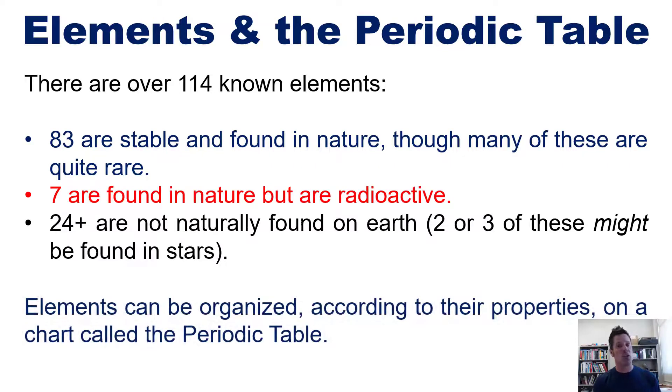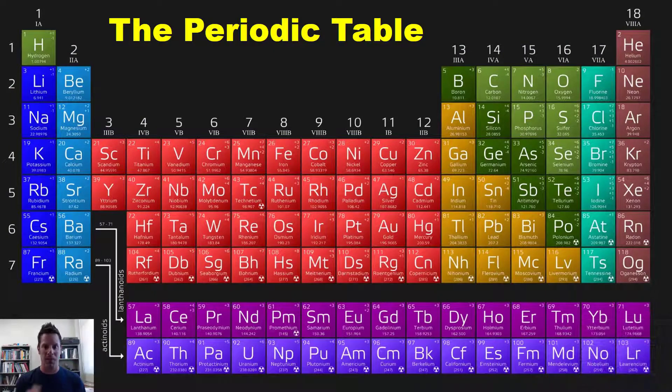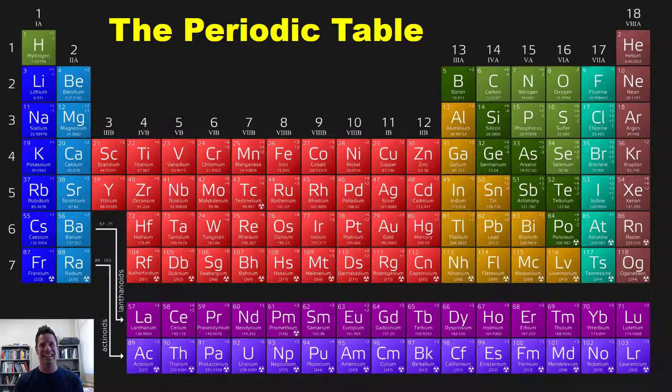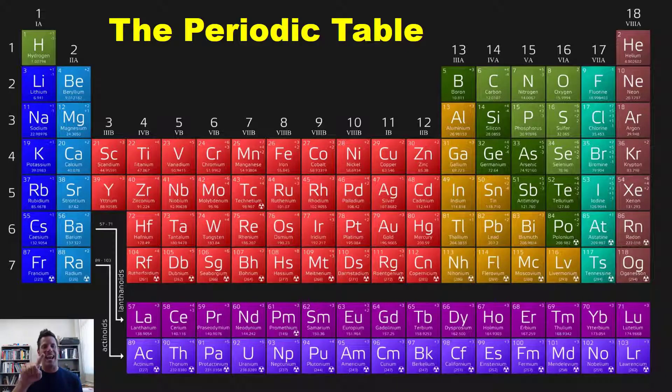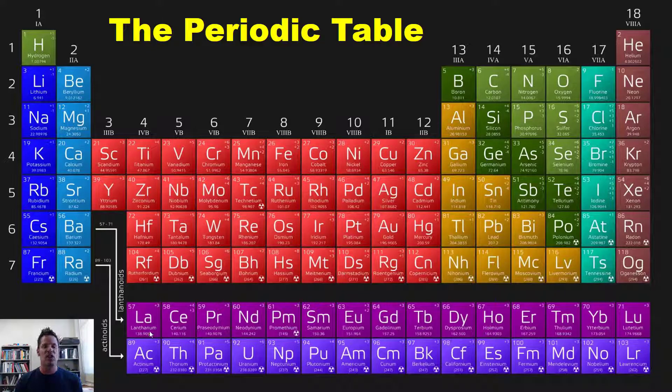Elements can be organized according to their properties on a chart that we call the periodic table, which is this table right here. As it turns out, the periodic table is usually shown in this manner with this rectangle of elements placed down here. This depiction, the most common one, is not technically correct. The reason we do it this way is because it fits more nicely on an 8.5 by 11 inch sheet of paper.